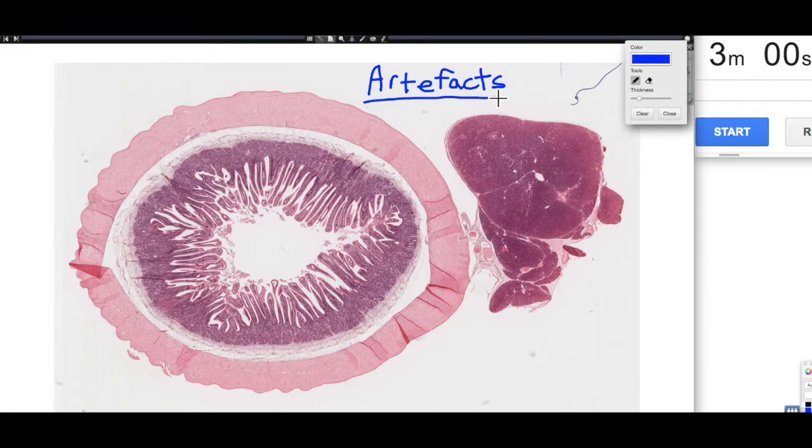So recognizing is the first important part, ignoring them is the second important part when you're doing histology. So artifacts, notice the spelling with the e, not i, that's the sort that Indiana Jones is looking for. Here we're looking for errors in processing for microscopy.